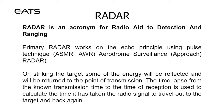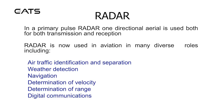On striking the target, some of the energy will be reflected and will return to the point of transmission. The time lapse from the known transmission time to the time of reception is used to calculate the time it has taken the radio signal to travel out to the target and back. In a primary pulse radar, one directional aerial is used both for transmission and reception.